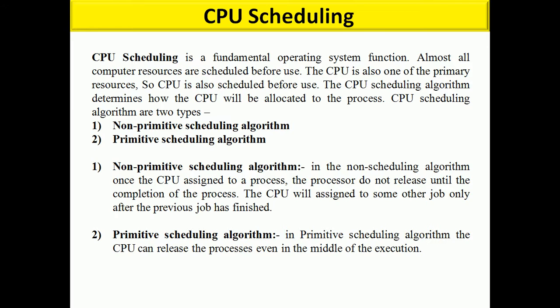In non-preemptive scheduling algorithms, once the CPU is assigned to a process, the processor does not release it until the completion of the process. The CPU will be assigned to some other job only after the previous job has finished. In preemptive scheduling algorithms, the CPU can release the process even in the middle of execution.